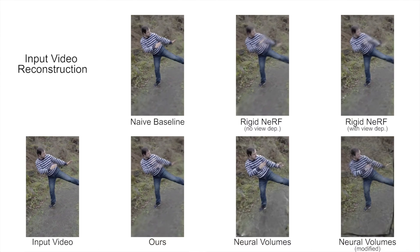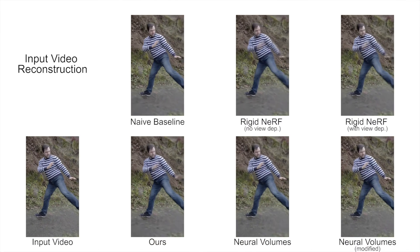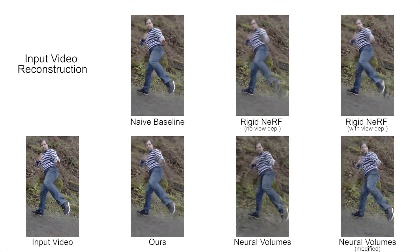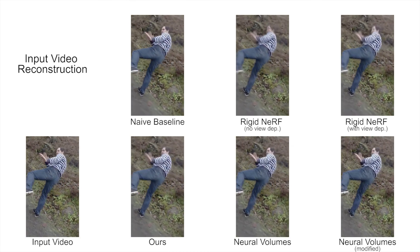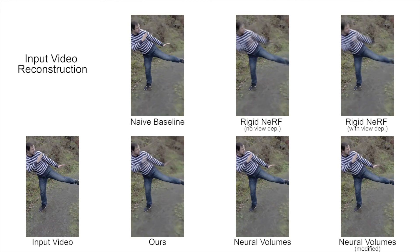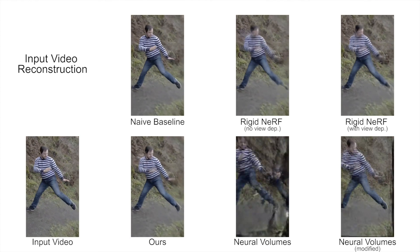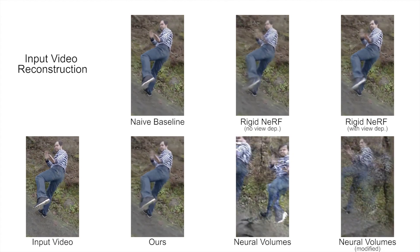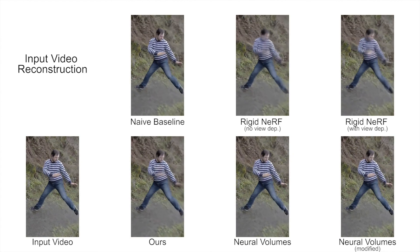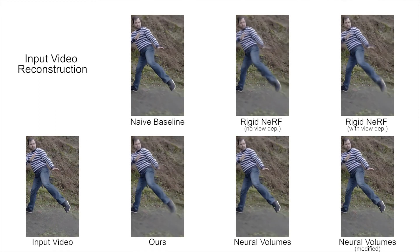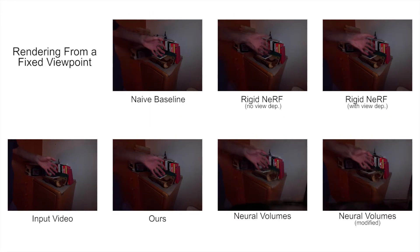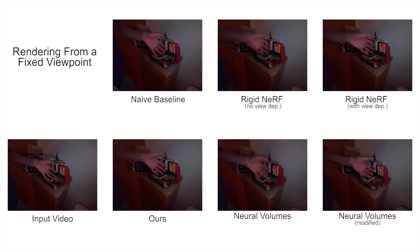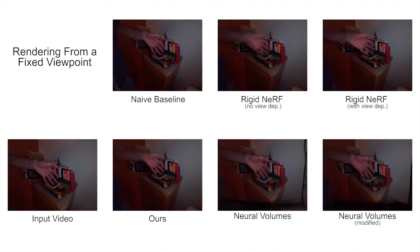We now compare to prior works and a baseline approach. For these comparisons, we split the input recording into a training set and a test set. The results of neural volumes include flickering artifacts on the test set. For some sequences with strong correlations between the camera views and deformations, all methods can reconstruct the input video well. However, all methods other than ours fail to synthesize the scene from novel viewpoints.